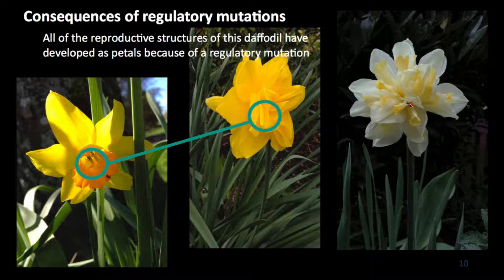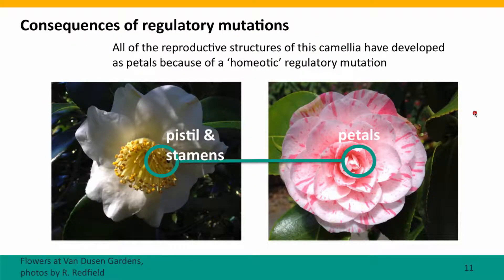And here's another daffodil that is making a whole bunch of little horns that don't have any reproductive structures in them, but they look very pretty. Here's one last one — this is a camellia. Again, you can see all the stamens that should have pollen and the pistils in the center, and they're completely missing in the flower. The red streaks are from a different mutation, probably another transposable element insertion.